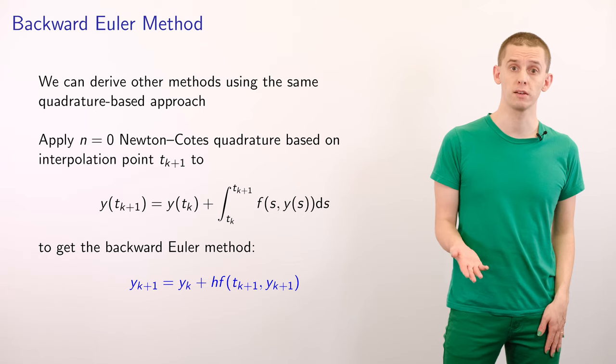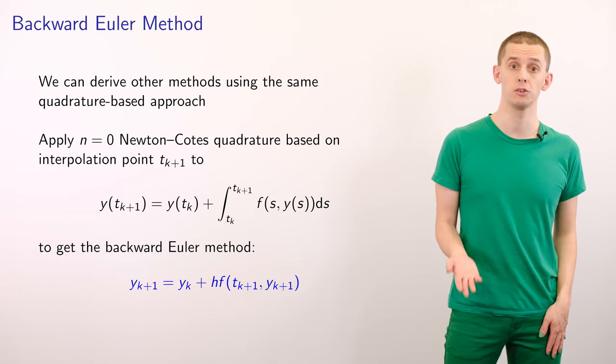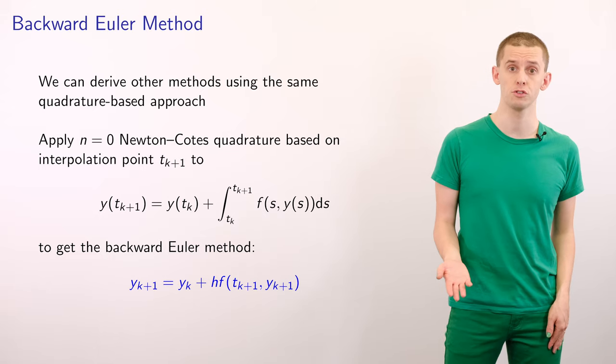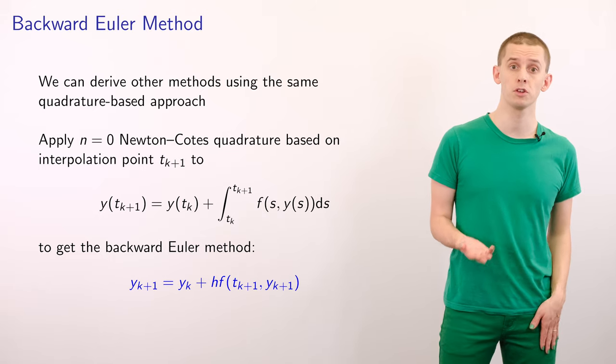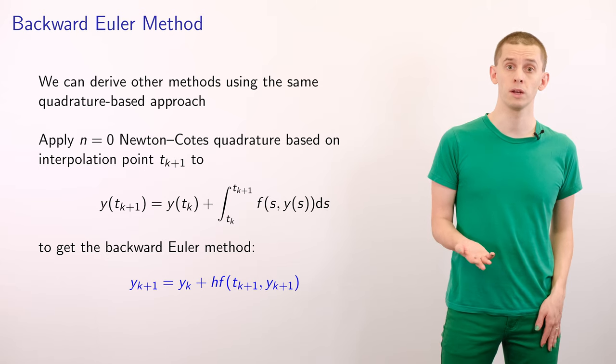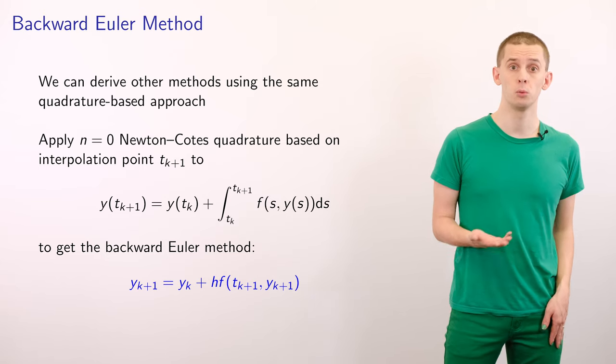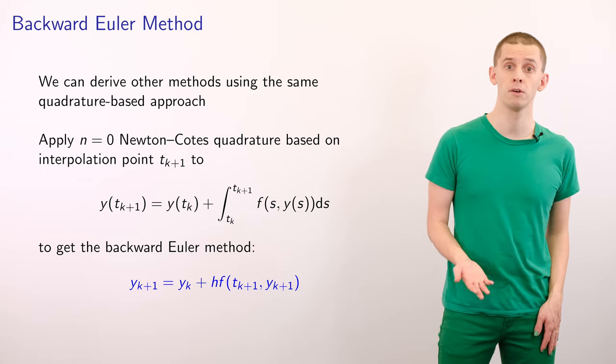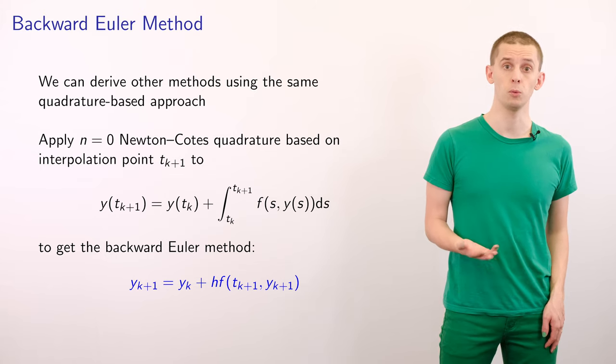We can use this quadrature based perspective to derive alternative numerical schemes. Suppose that we looked at n equals 0 Newton-Cotes quadrature, but we now may use a single interpolation point at tk plus 1. In this case, we'd end up with the backward Euler formula, where yk plus 1 is equal to yk plus h times f of tk plus 1 comma yk plus 1.